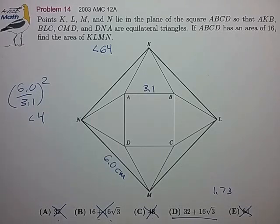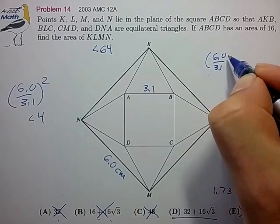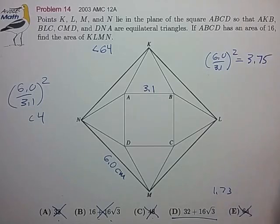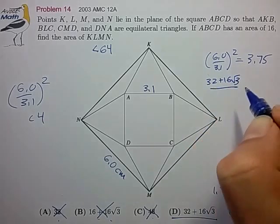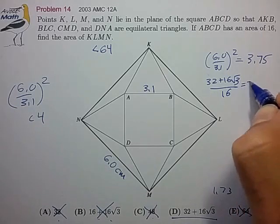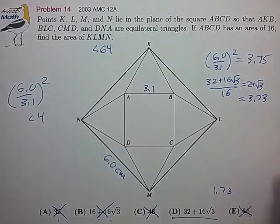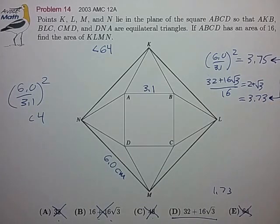And if you work this out a little more carefully after the test you would see that the ratio that we came up with 6.0 over 3.1 squared is roughly 3.75. And if you worked out the ratio of the exact answer you'd end up with 32 plus 16 radical 3 over 16 and that's equal to 2 plus radical 3 and that's equal to 3.73. So that's pretty close. So just a basic simple ruler measurement gave us the answer that was correct to within about a percent.